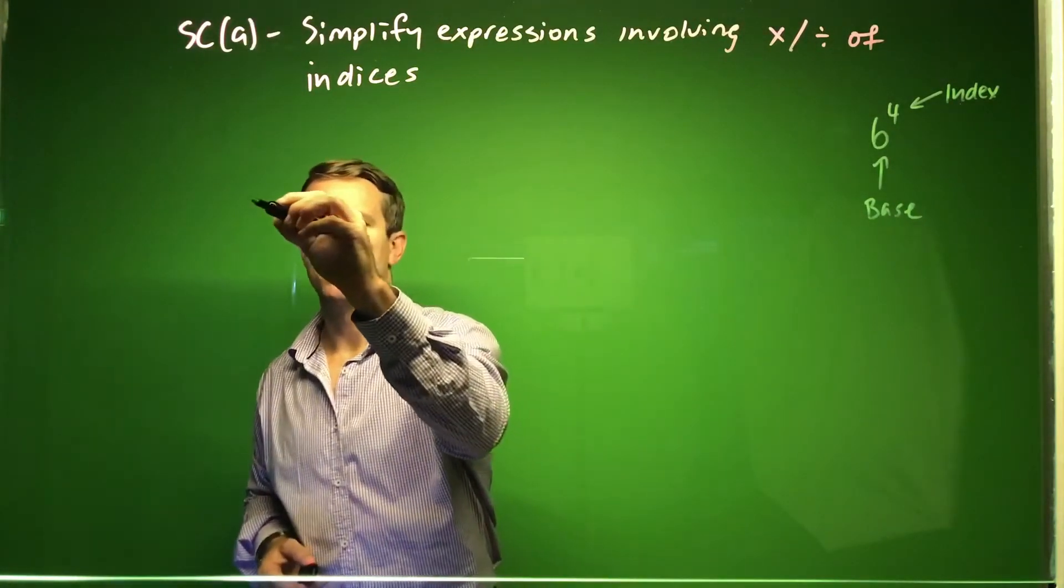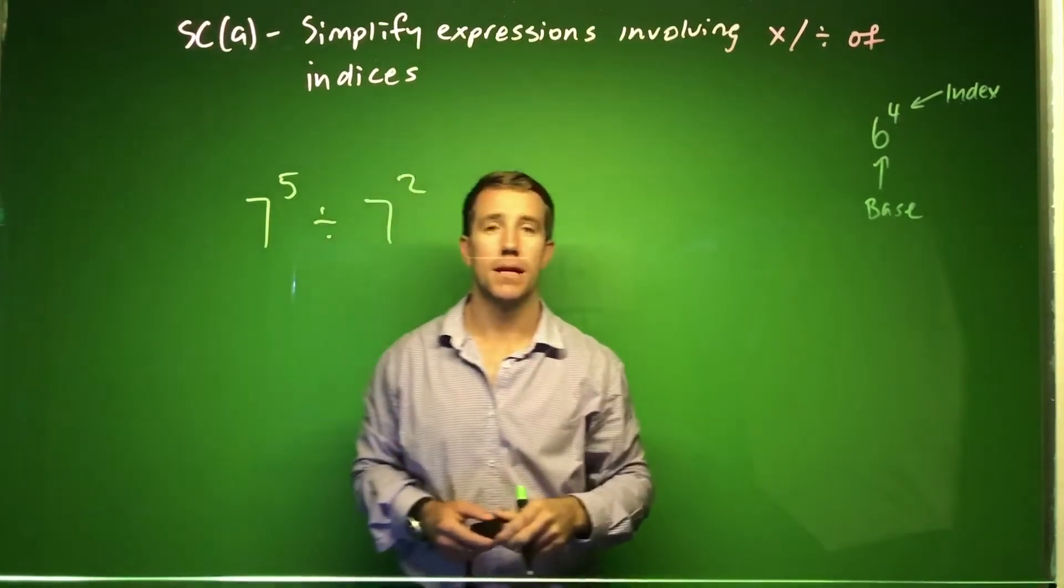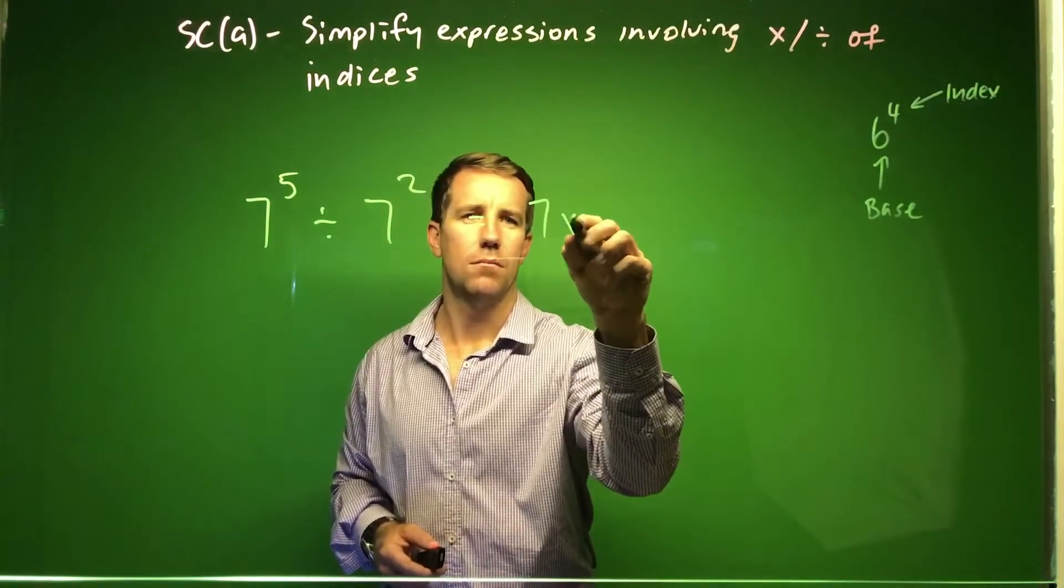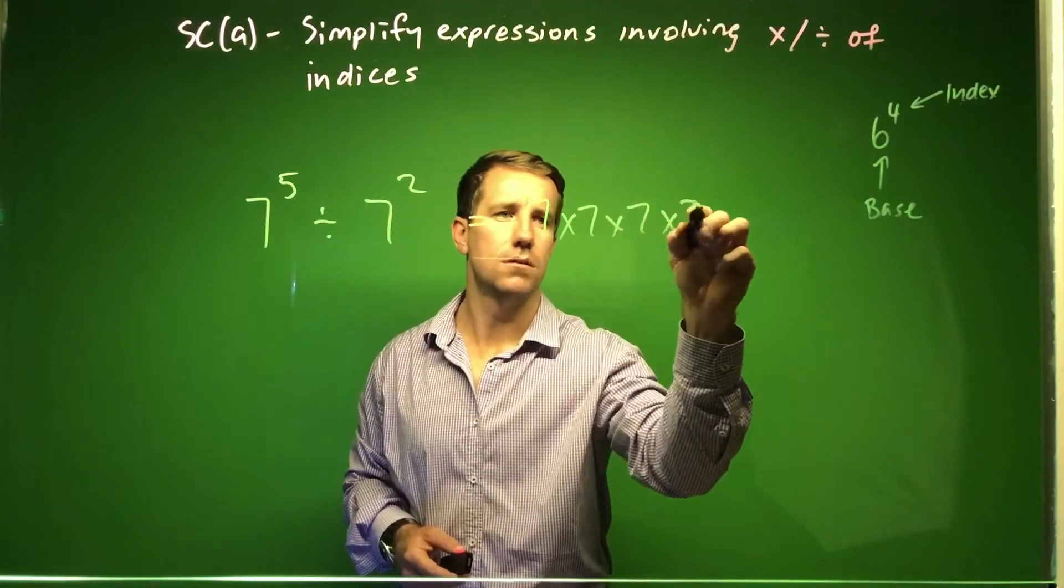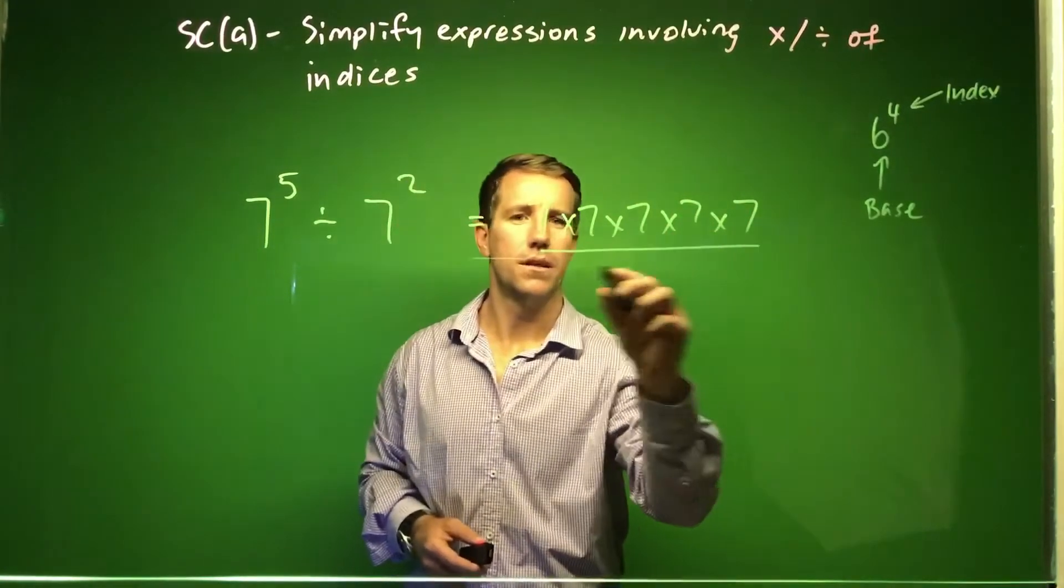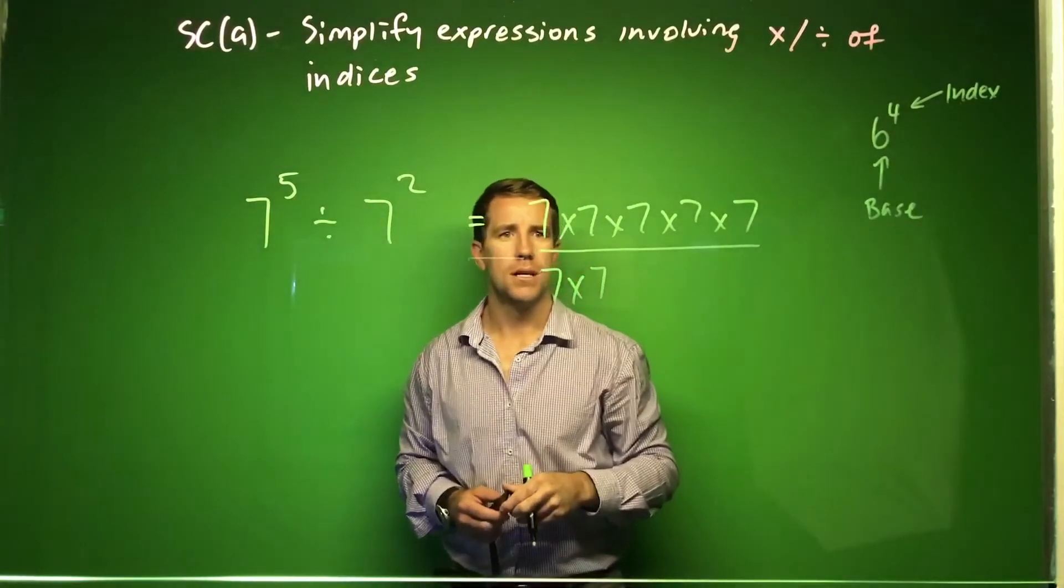What we might be posed with is 7 to the power 5 divided by 7 squared, something like that. How we can rewrite that is, if we write that as 7 multiplied by 7 five times to represent 7 to the power 5, we can then divide that by 7 squared, which is just 7 multiplied by itself 2 times.